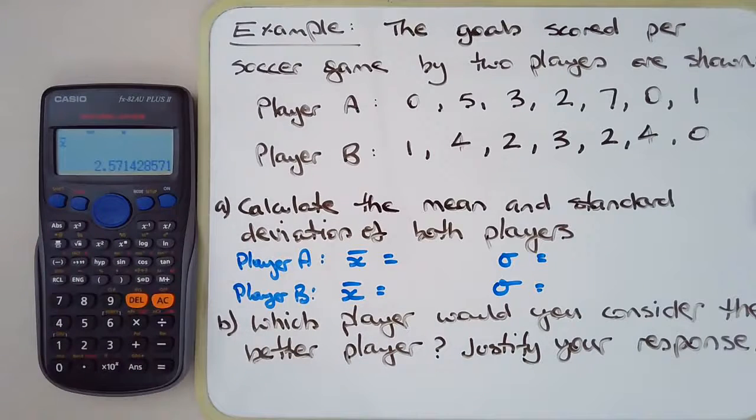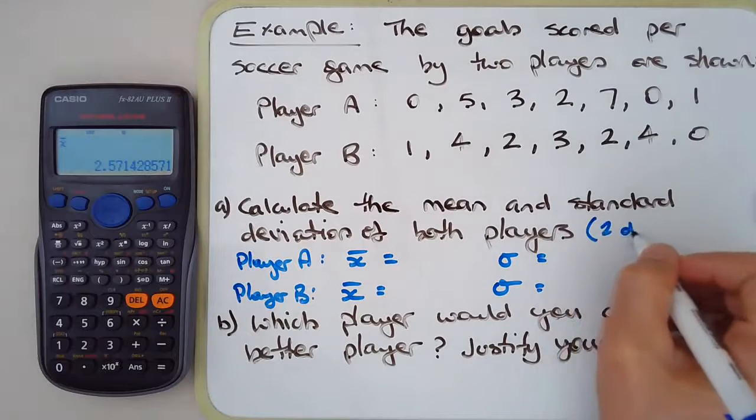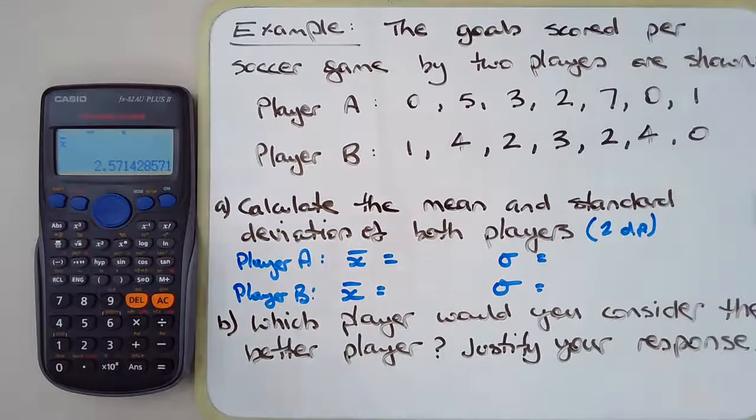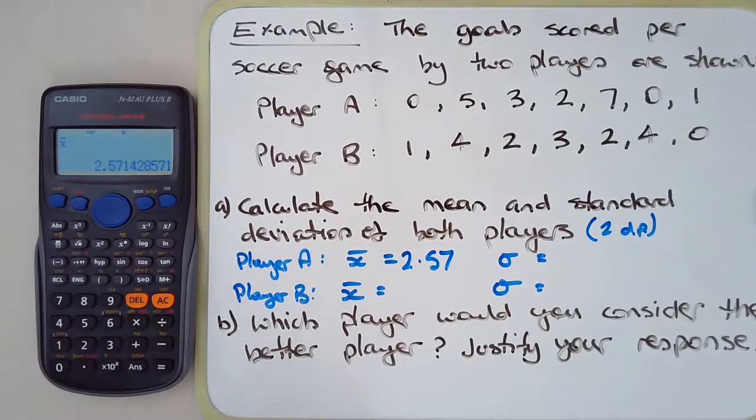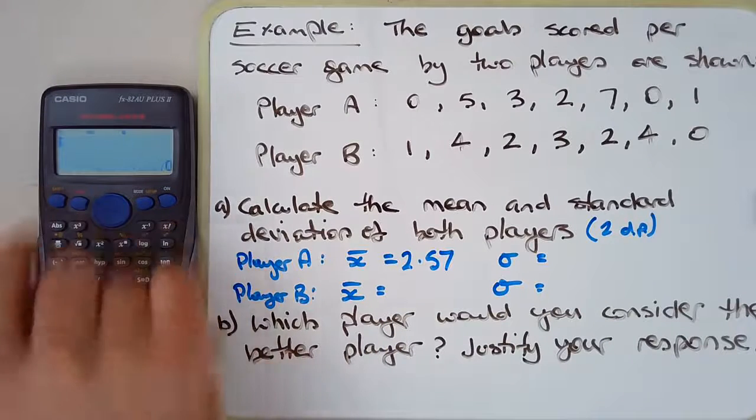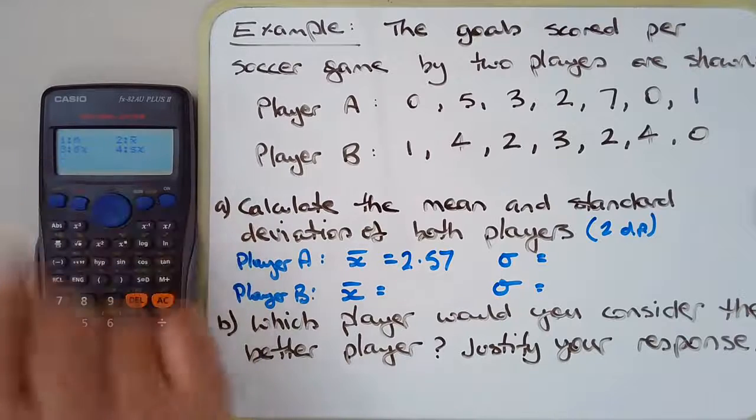We'll do the mean first which is option number two with the x bar. We'll calculate this to two decimal places, so it's going to be 2.57. Standard deviation: shift, one var, number four standard deviations, and number three, and we get 2.44.